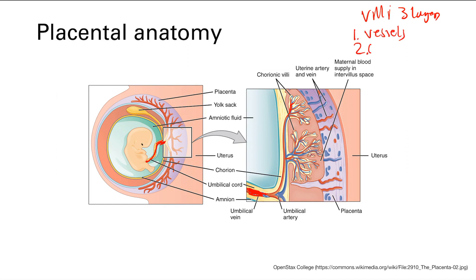And number two is the cytotrophoblast. And I don't think these are too important, but just know that they are there in this layer. And in the outermost layer, right above the cytotrophoblast, are the syncytial trophoblast.